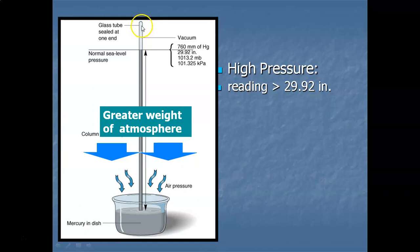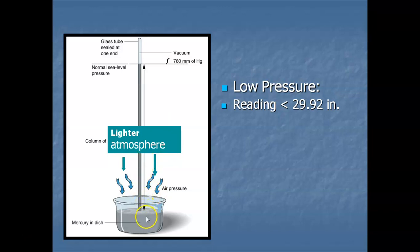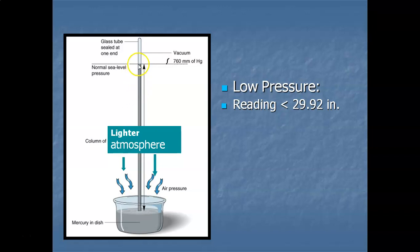Conversely, when we have low pressure, we have a falling barometer. When low pressure moves in, the atmosphere is lighter — it's exerting less pressure on the surface of the earth, or in this case, the dish of mercury. Lighter air pressure allows the mercury in the tube to fall because there's less pressure weighing down on the dish. Any reading below 29.92 inches of mercury is considered low pressure.